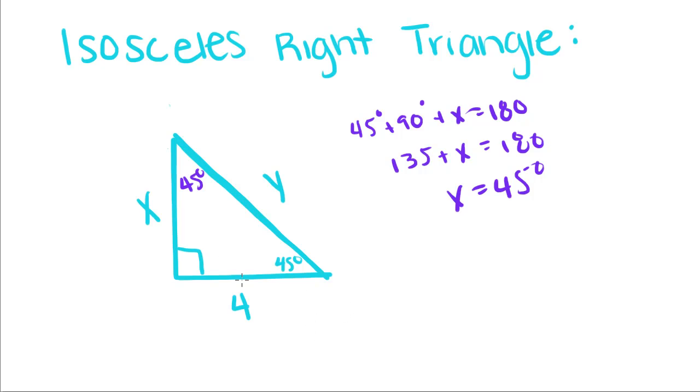So we know that this is an isosceles right triangle, which means this side is congruent to this side.